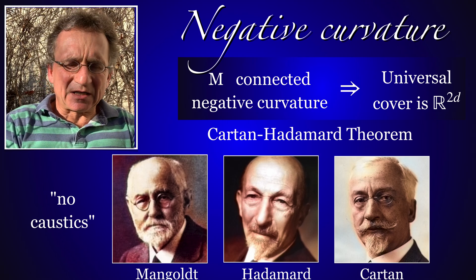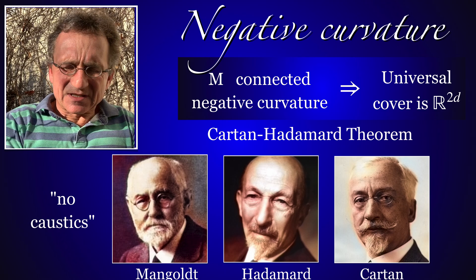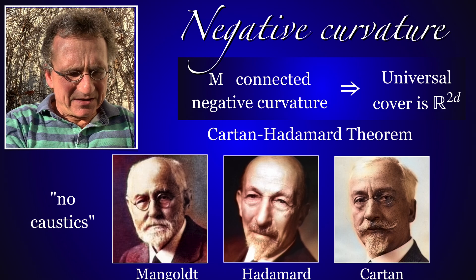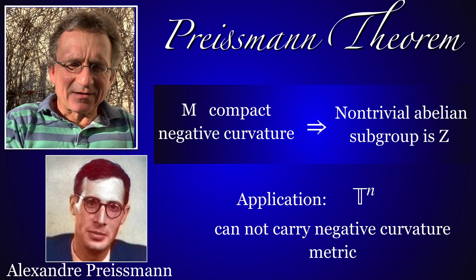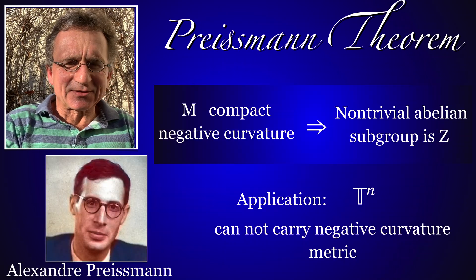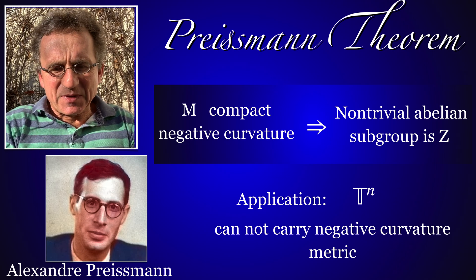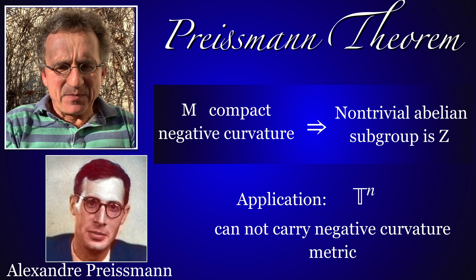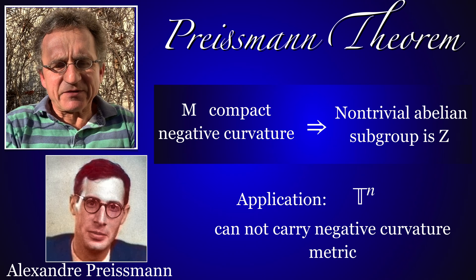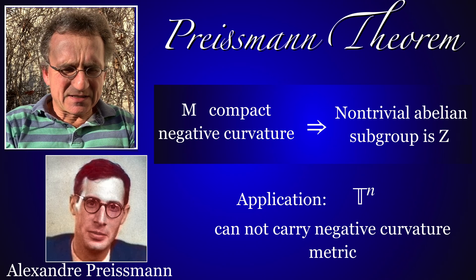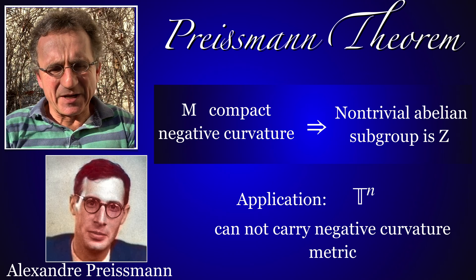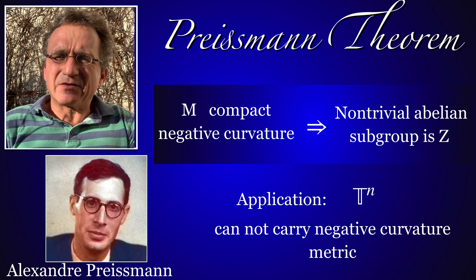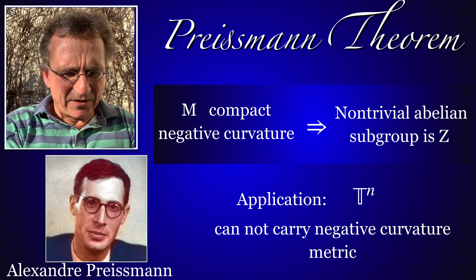This is the theorem of Cartan-Hadamard, also found by Mangoldt in dimension two. There is a nice result of Preissmann, a student of Hopf who later became a hydrologist: he proved that every non-trivial abelian subgroup of the fundamental group is ℤ. This means, for example, that on an n-dimensional torus with n ≥ 2 there is no negative curvature.